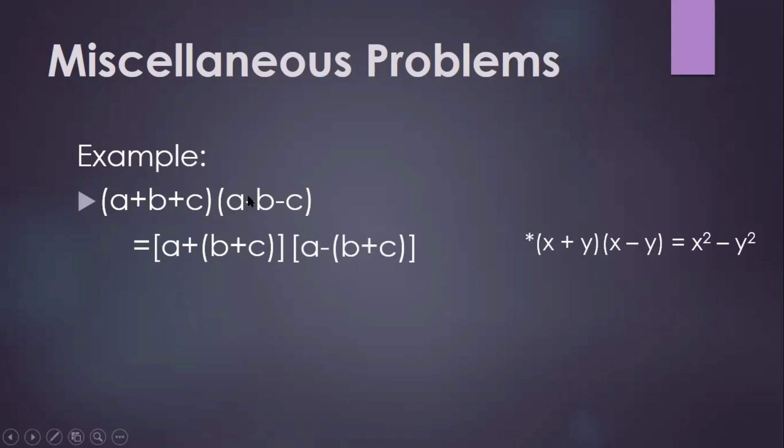And as you can see, we have a minus sign here. So if we're to group b and c, we're going to change the sign of c. So that will be a minus the quantity b plus c. And if you're going to distribute the negative sign, this will just result to a minus b minus c.